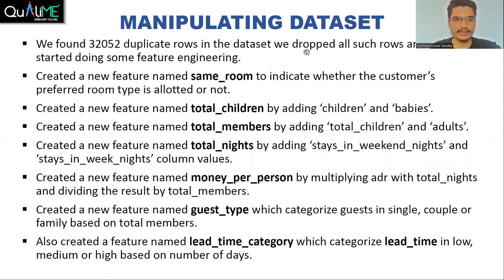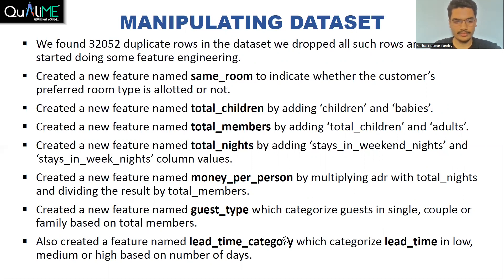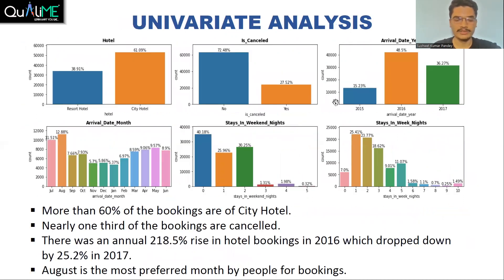After treating the outliers, we did some data manipulation. First, we dropped all duplicate rows from the dataset, and then we did some feature engineering. We created a column named 'same room' to indicate whether the customer's preferred room was allotted or not — a boolean variable. We created 'total children' by adding children and babies, 'total members' by adding total children and adults, and 'total nights' by adding stays in weekend nights and stays in weeknights. 'Money per person' was calculated by multiplying ADR with total nights and dividing by total members. 'Guest type' categorizes guests into single, couple, or family based on total members. 'Lead time category' categorizes lead time into low, medium, or high based on number of days.